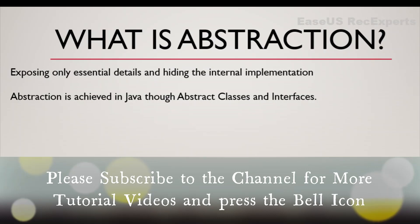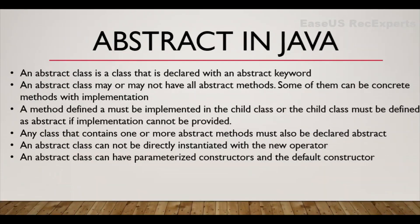In Java, abstraction is achieved through abstract classes and interfaces. Before diving into hands-on, let's check the main characteristics of abstract components in Java. First, an abstract class is a class that is declared with the abstract keyword — we declare it as public abstract class and then the class name. Any class which is declared abstract may or may not have all abstract methods; some of the methods can be concrete, meaning their implementation is already present in the class.